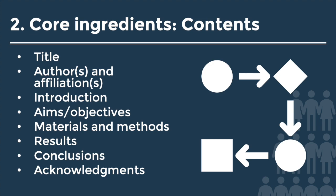Moving on as part of core ingredients, we need to think about the contents. I often use a scientific model to help structure my thinking when presenting a poster. It's always key to start with a good, clear title. You then need to list your authors and any affiliations — to an organisation, a research group, or indeed a university. I then structure the flow using the scientific model, listing the introduction, aims and objectives, materials and methods, results, conclusions, and acknowledgements.